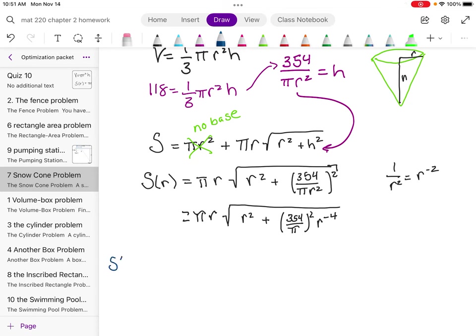So we have s prime of r. And to do product rule, sort of here's one piece and then here's my other piece. So I'll start with the pi r because that's a little easier. So the derivative of that would just be